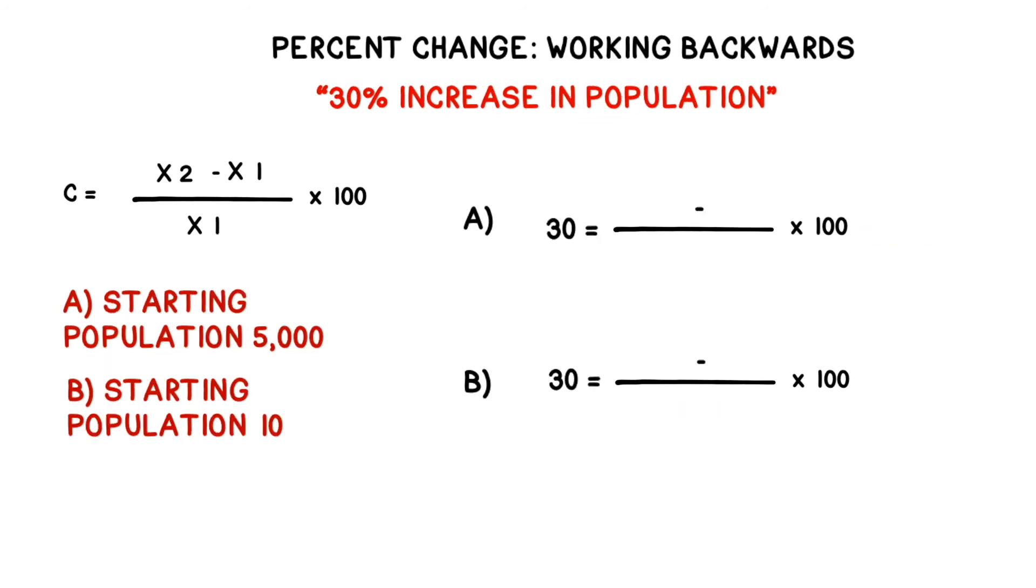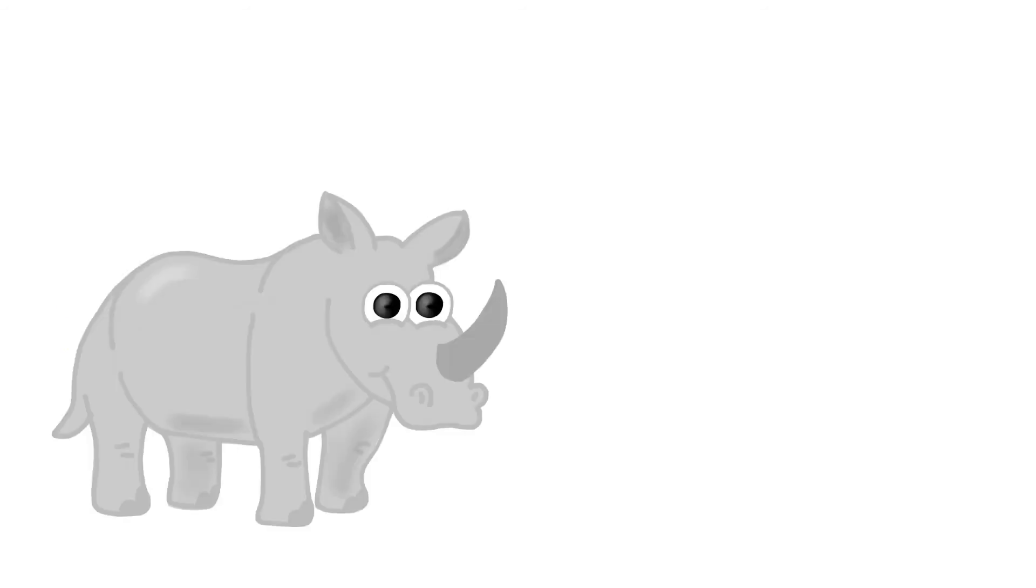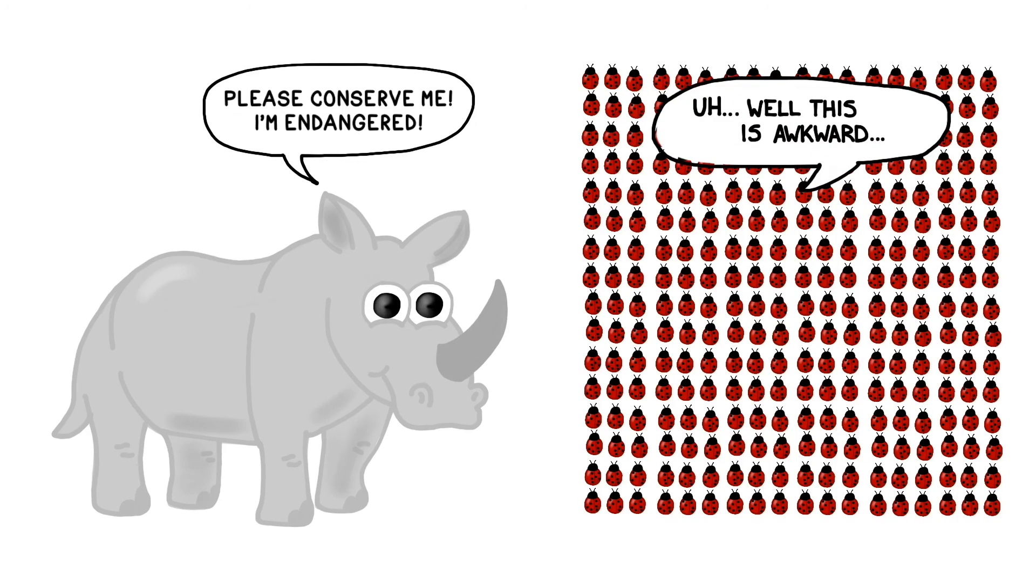You can also use this same equation to calculate the final or the initial value if you know the percent change. For instance, a conservation organization might set a goal of increasing the population of an endangered species by a specific amount over a few years.